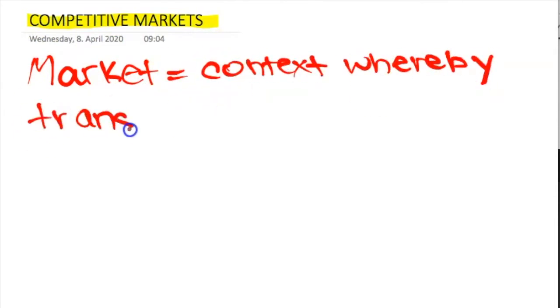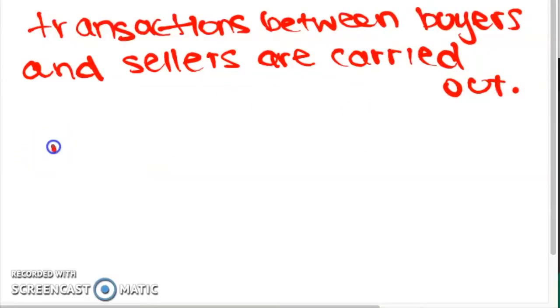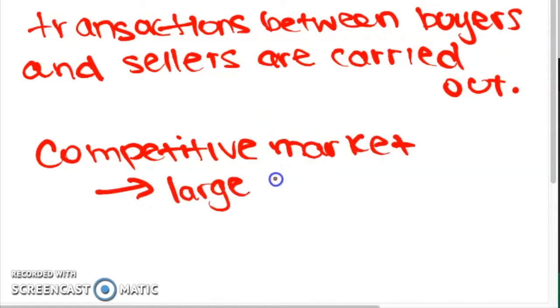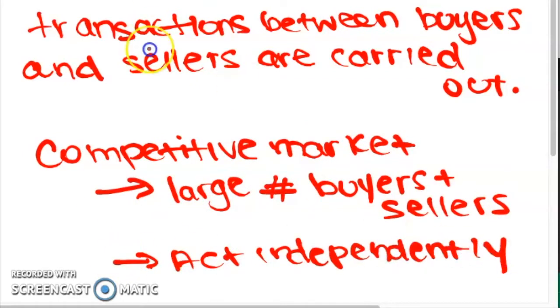So the first topic in chapter 2 is competitive markets, demand and supply. A competitive market is defined as a market that is composed of many buyers and sellers who act independently, none of whom has any ability to influence the price of the product. Because there are so many buyers and sellers in a market, no one really has the ability to overall change the price of a certain good.